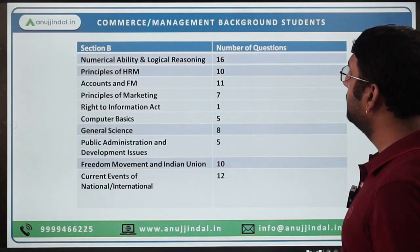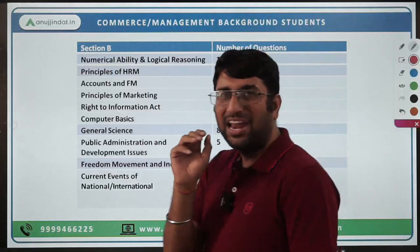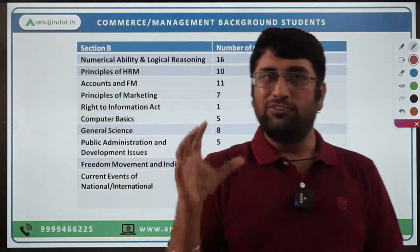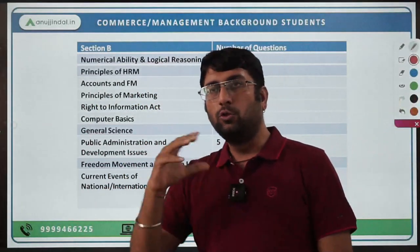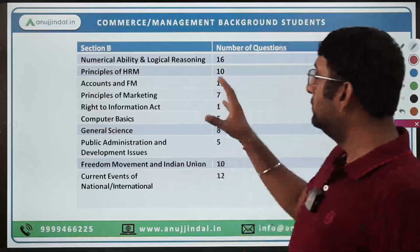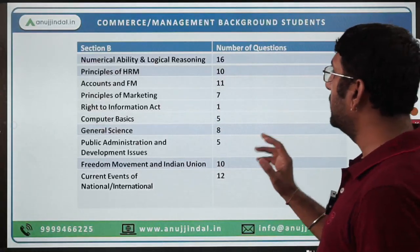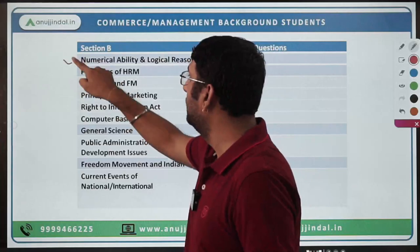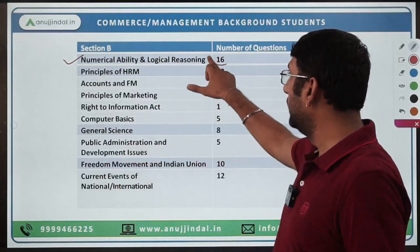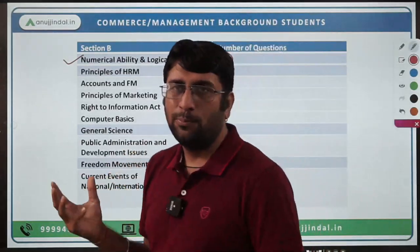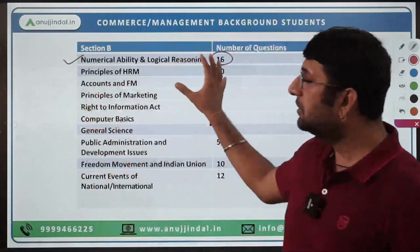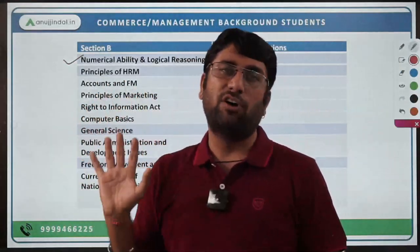Now for commerce and management students — someone who has done B.Com, M.Com, or MBA — what could be a probable sequence of studies? The very first topic you should focus upon is Numerical Ability and Logical Reasoning because it has one of the highest weightages. If you have been preparing for other competitive exams like UPSC, SEBI, RBI, or NABARD, this section would have already been comprehensively covered by you.